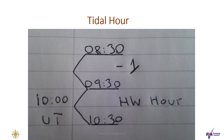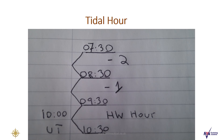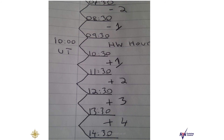If we're sailing on our boat, we can do this on a piece of paper like this. High water is 10 o'clock universal time. High water hour is 09:30 to 10:30. High water minus 1 will be 08:30 to 09:30. High water minus 2 will be 07:30 to 08:30. And so on. We can do this 6 hours before high water hour and 6 hours after high water hour.